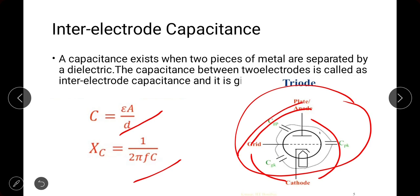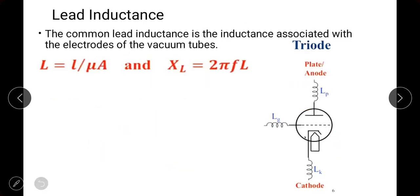At lower frequencies, the inter-electrode capacitance acts as an open circuit, which is the desired behavior. But above microwave frequencies, it acts as a short circuit or low resistance, which is unwanted. This is one reason the vacuum tube cannot be useful above one gigahertz — the inter-electrode capacitance causes it to fail.